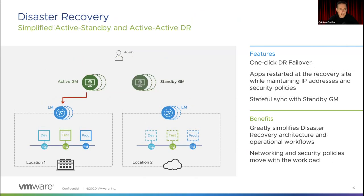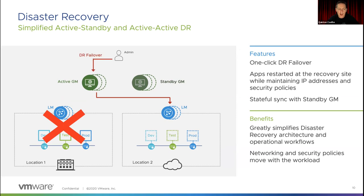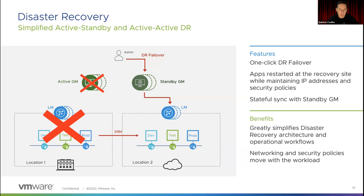From a disaster recovery standpoint, the active Global Manager configures the Local Managers. If a Local Manager fails, it continues to configure the remaining Local Managers. Workloads move and recover via SRM or similar tools. If the active Global Manager fails, you connect via the DR manager — the active Global Manager constantly replicates configuration to the standby. However, this standby Global Manager feature is not available in NSX 3.0. In 3.0, federation is positioned for customers to test and get familiar with the functionality; stability improvements will come in subsequent releases.